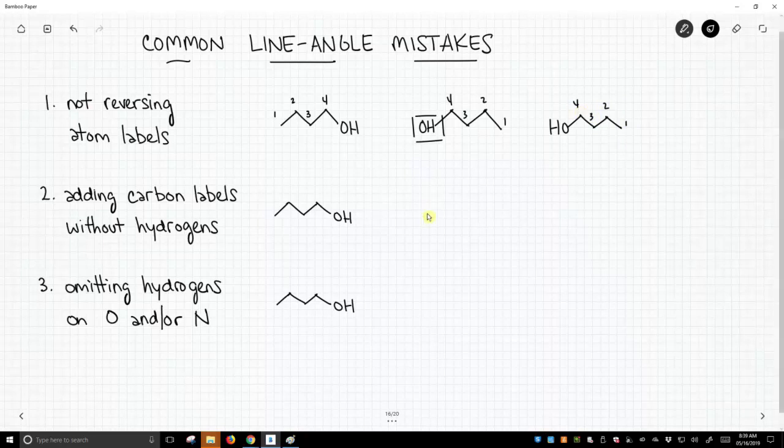Number two is students will draw a structure, and I'm going to make a new identical structure of butanol, and they'll say, okay, so I know there's a carbon there, and I know there's a carbon there, and there's a carbon there, and there's a carbon there. You can label carbons, okay? Typically, you don't, but you are allowed to label carbons.